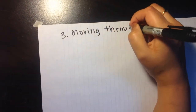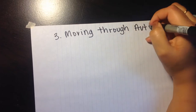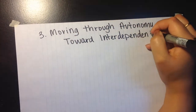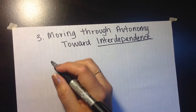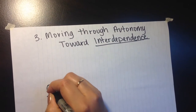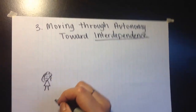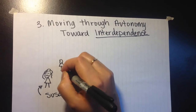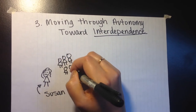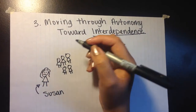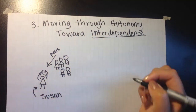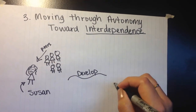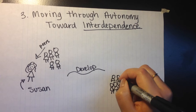The third vector is moving through autonomy toward interdependence. Here we have Susan. Susan just joined a sorority and is battling identity issues. She is emotionally dependent on her sorority sisters and constantly needs the approval of others. Over a period of time, as Susan develops, she becomes more autonomous but still interdependent on her sorority sisters.